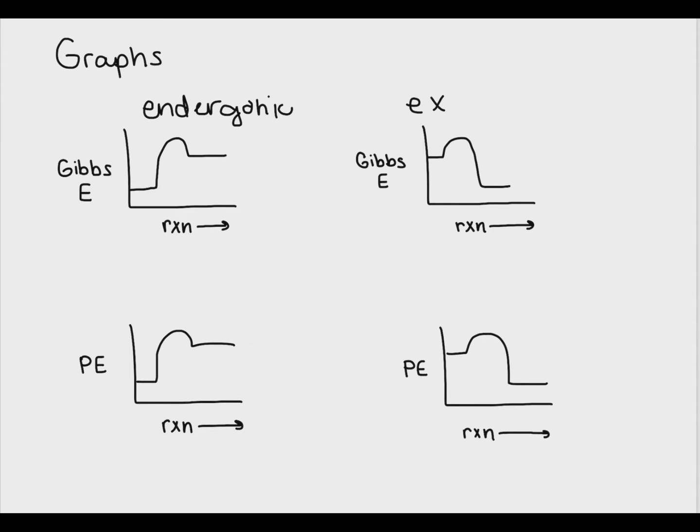Remember that while a reaction may gain or lose heat, it also loses or gains energy in the form of potential energy. When we're talking about an exergonic or endergonic reaction, we're specifically talking about the gain or loss of Gibbs energy. This is why these reactions are associated with spontaneity—because they show a direct change in Gibbs free energy.